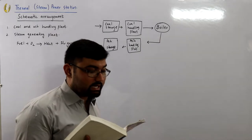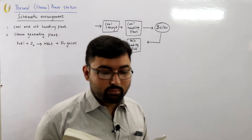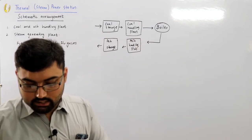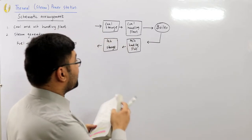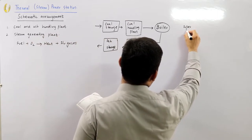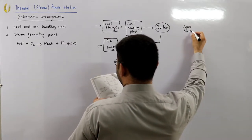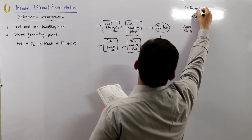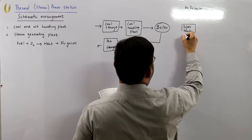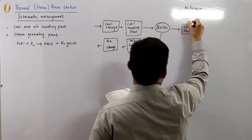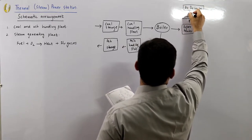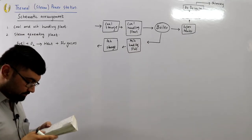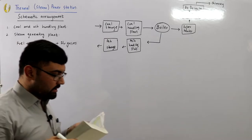The flue gases from the boiler must be eliminated from the system through the chimney. On their journey out, they pass first through the superheater, then the economizer, then the air preheater, and are finally exhausted through the chimney. We will look at each of these one by one.